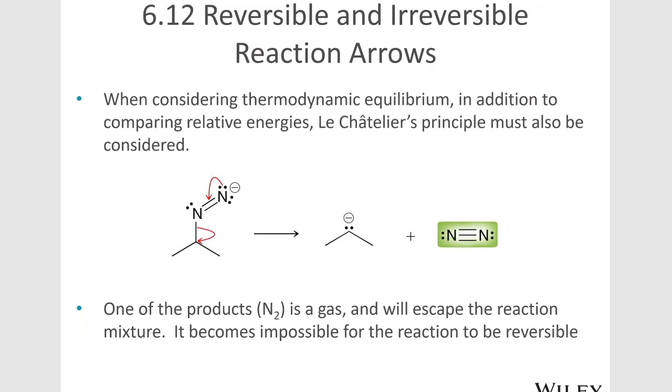And we also have to consider Le Chatelier's principle. If we're removing one of the products as it is formed, in other words, this is into gas, then that's going to be an irreversible reaction because it's being removed from the system and it can't react anymore. So we're going to see that also sometimes things like ammonia will leave and that will drive the reaction forward. That's essentially an irreversible reaction.